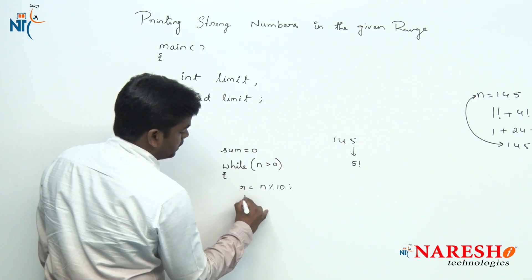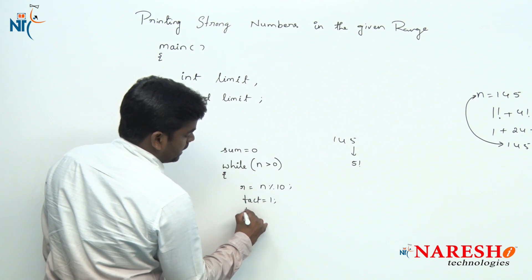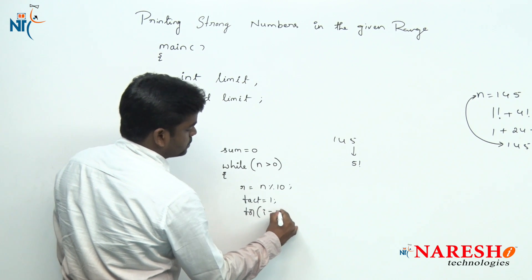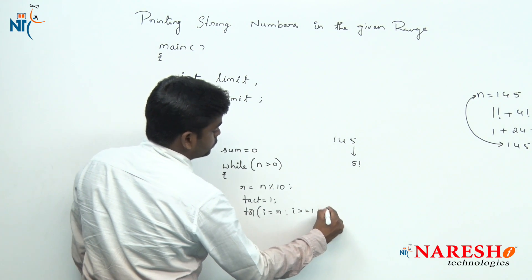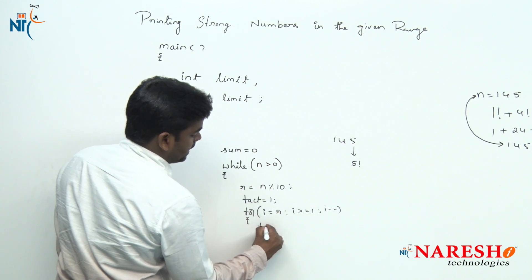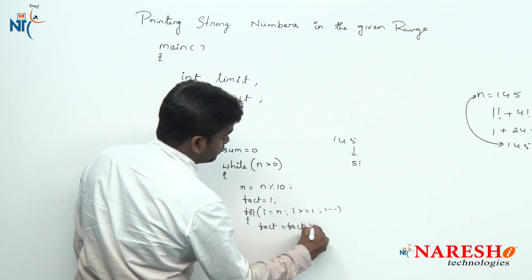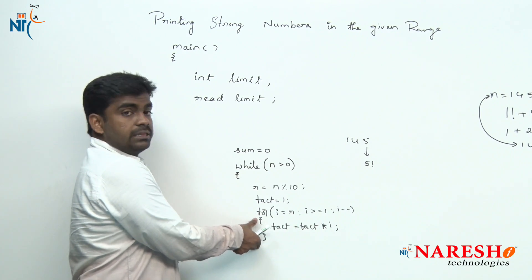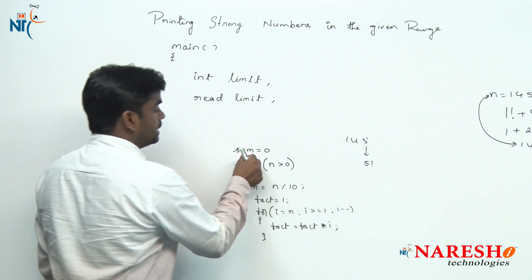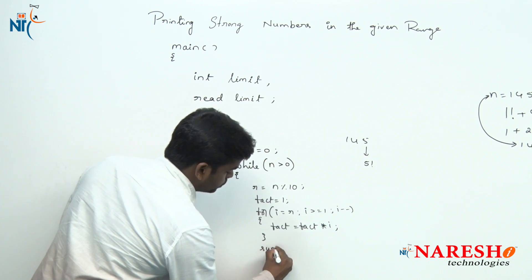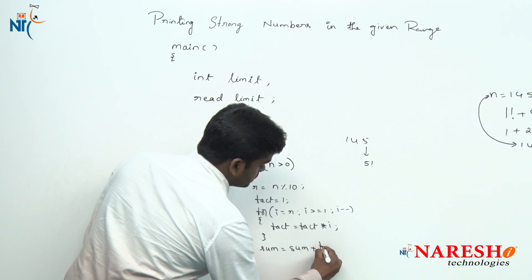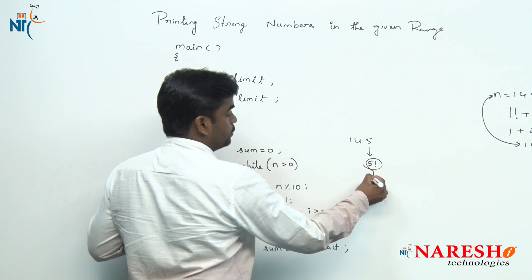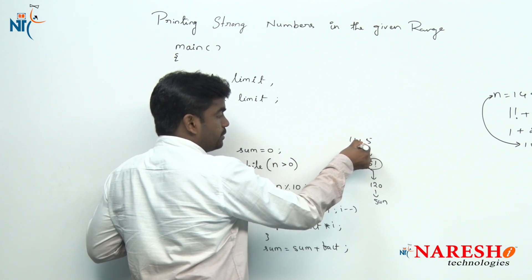To find the factorial, declare a variable fact equals 1. Using a loop: i starts from R, while i is greater than or equal to 1, decrement i — fact equals fact into i. This computes the factorial of R. After finding the factorial, add it to sum: sum equals sum plus fact. For example, 5 factorial is 120, which we add to sum.